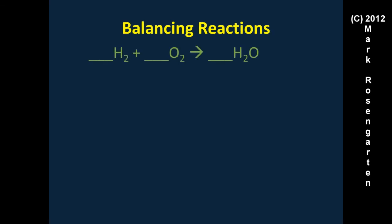Example one: diatomic hydrogen and diatomic oxygen form molecular H₂O. We have two hydrogens on the left and two on the right, so hydrogen is balanced. But we have two oxygens on the left and only one on the right, so we put a coefficient of two in front of H₂O. Now we have two oxygens on both sides — but that throws off hydrogen: we still have two on the left but now four on the right.